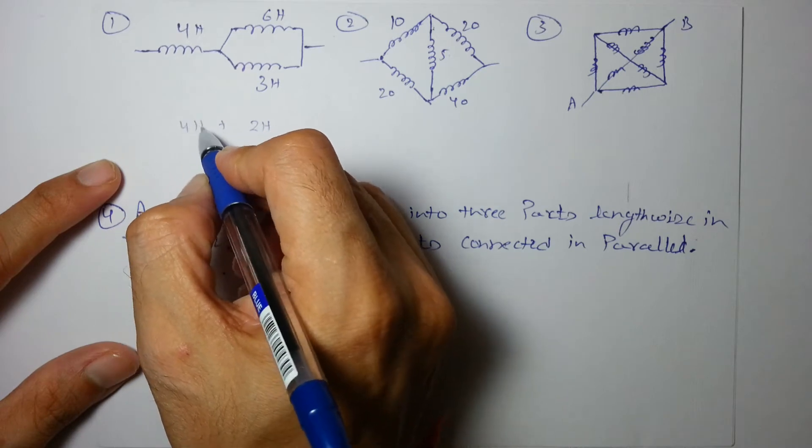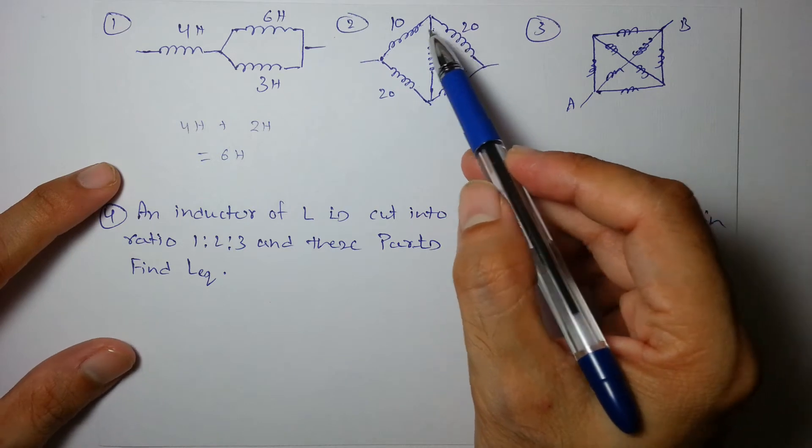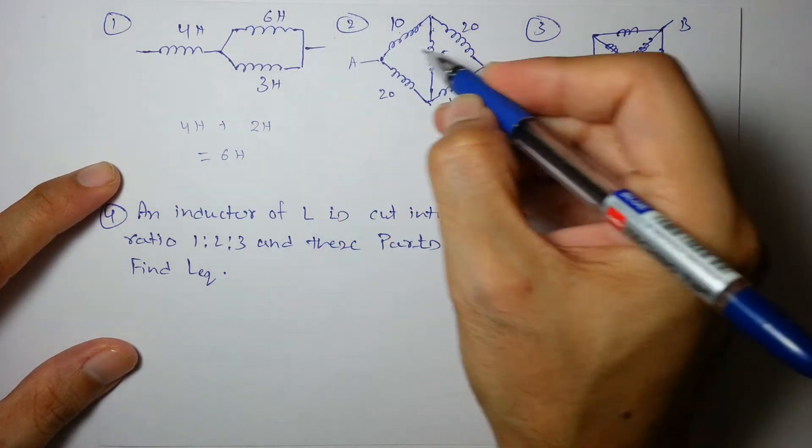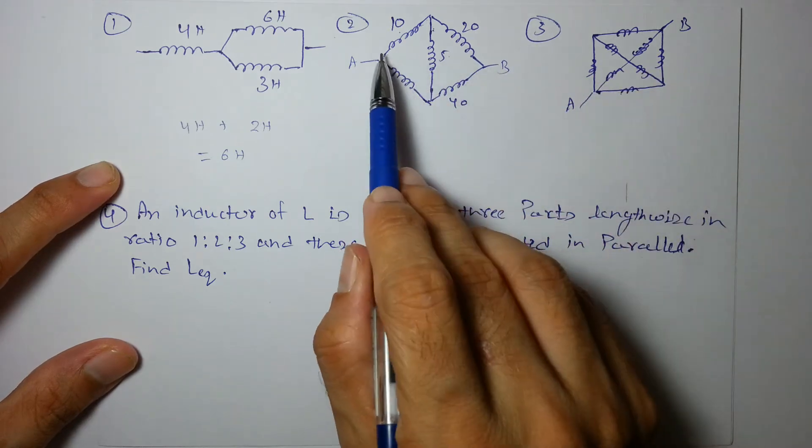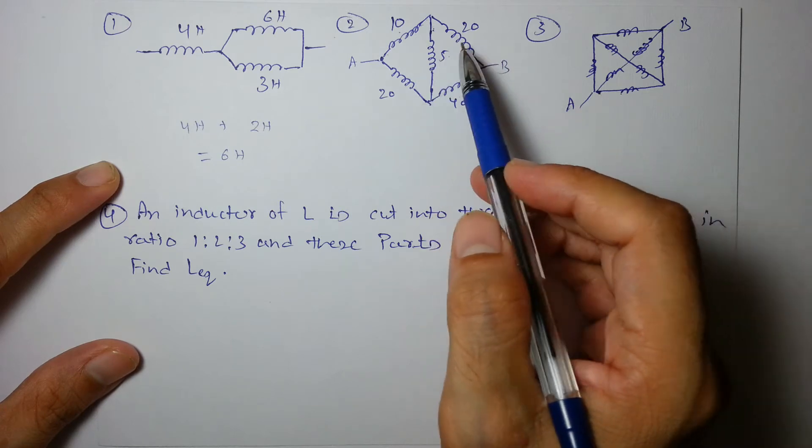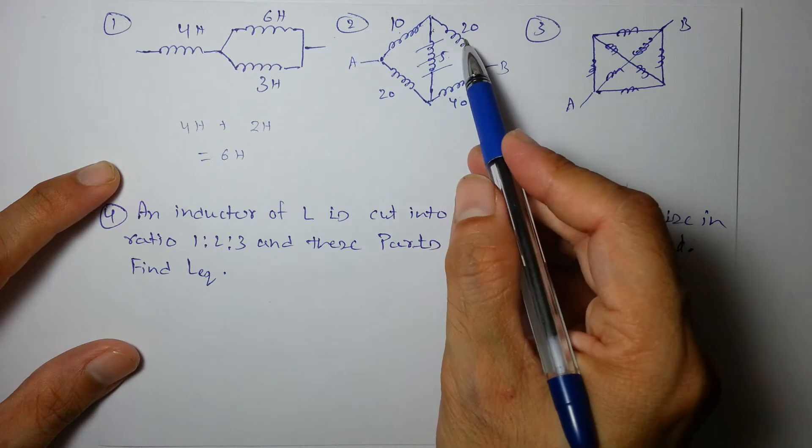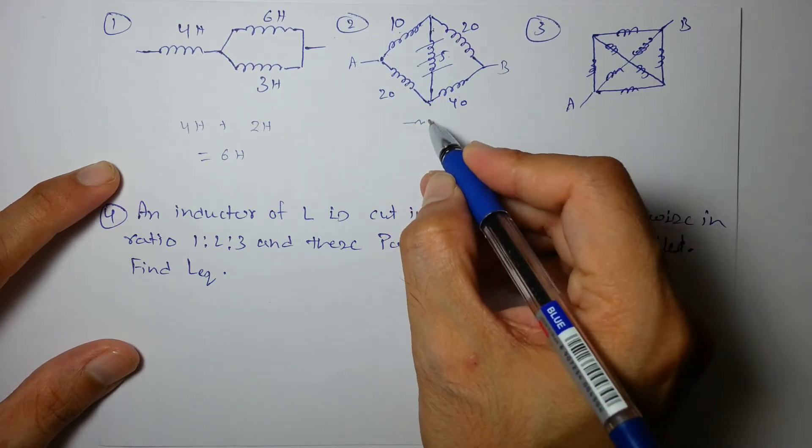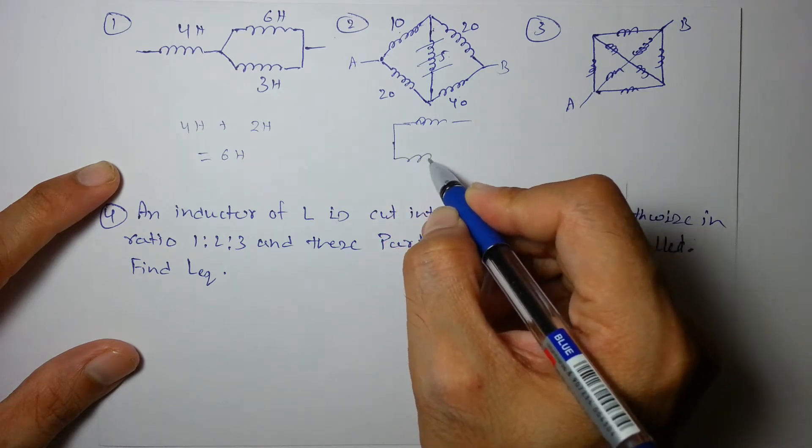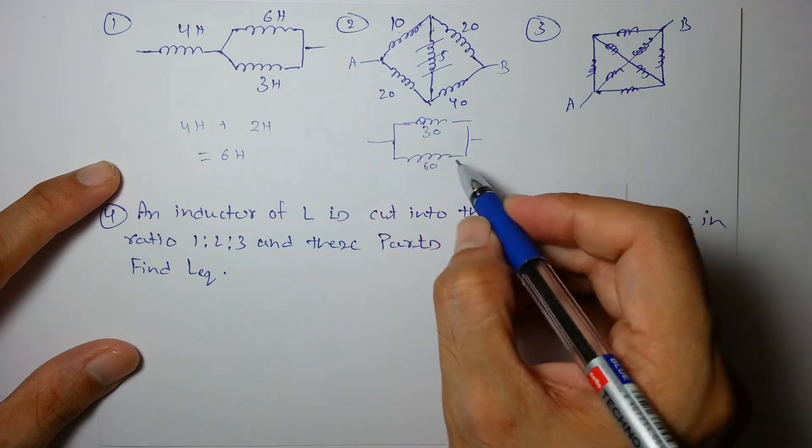The next example is 10, 20, 20, 40 and we have to find L equivalent between AB. You must remember that this appears like a Wheatstone bridge, so the same logic can be applied. This can be removed and 10, 20 will come in series, so it will appear like two parallel combinations of inductors: one is 30 and another is 60. 30 and 60 will give you again 20 Henry as equivalent.